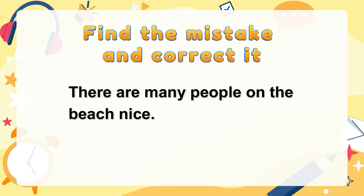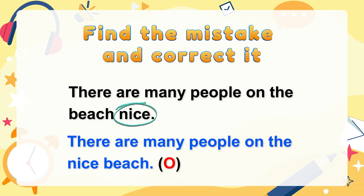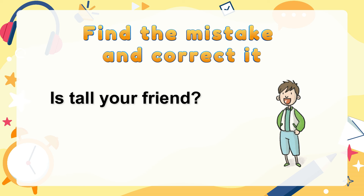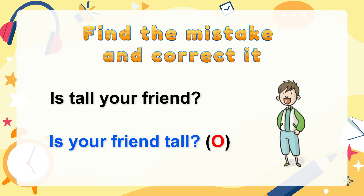'There are many people on the beach nice' — the adjective should come before the noun. The answer is: 'There are many people on the nice beach.' 'Is tall your friend?' — in this question, the adjective should be last. The answer is: 'Is your friend tall?'